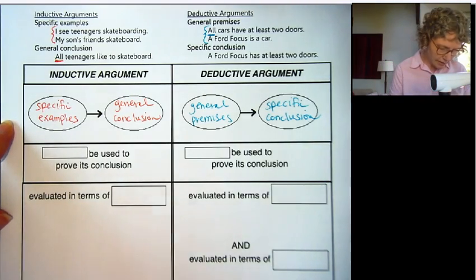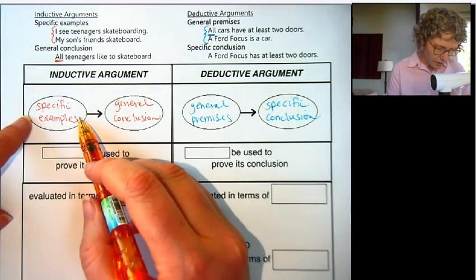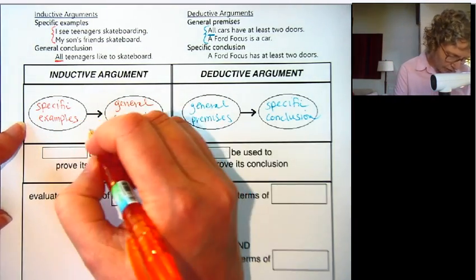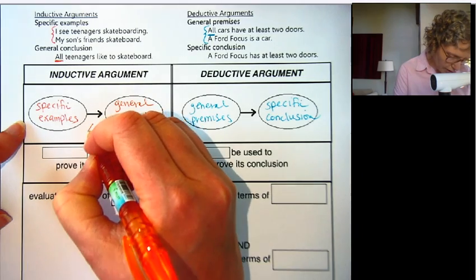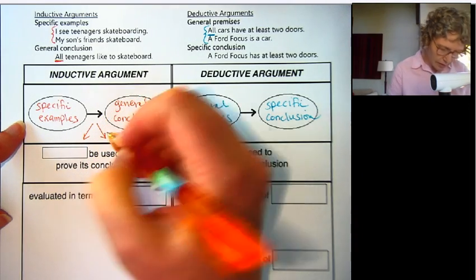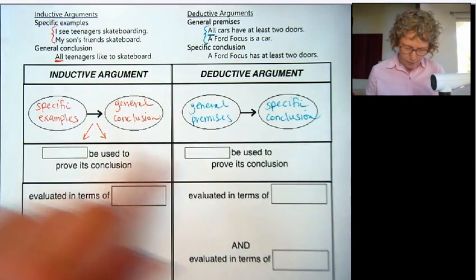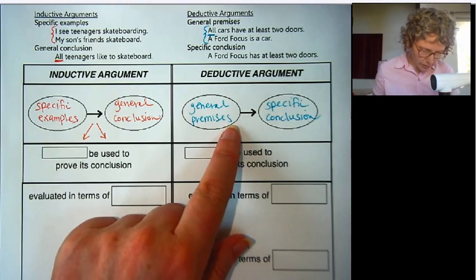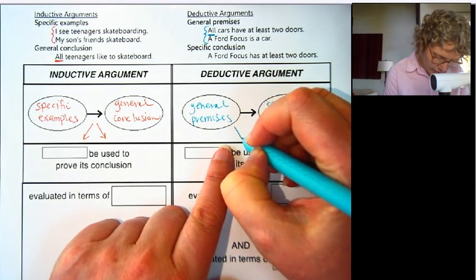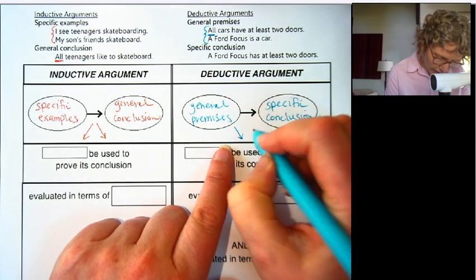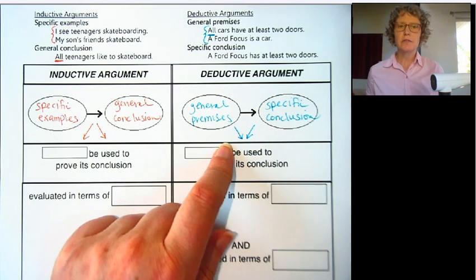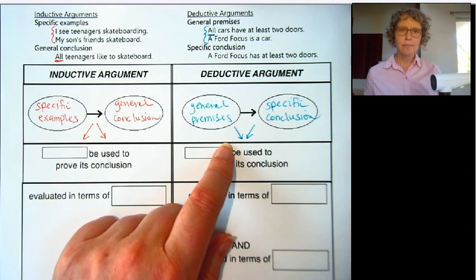I like to think of it like this. Going from specific to general is kind of broadening out or widening, whereas going from general to specific is starting wide and going narrow. So they go opposite of each other.